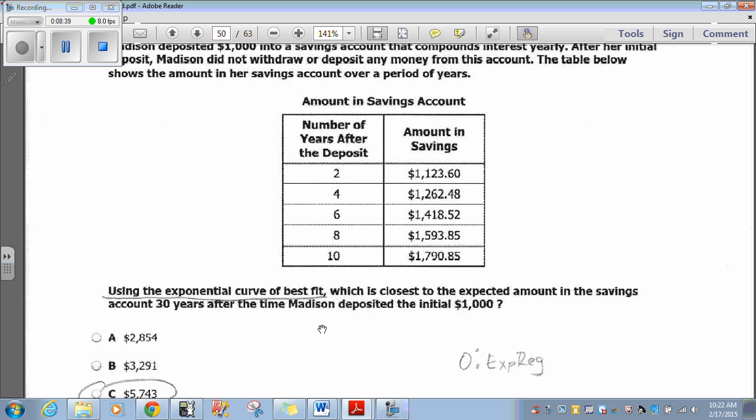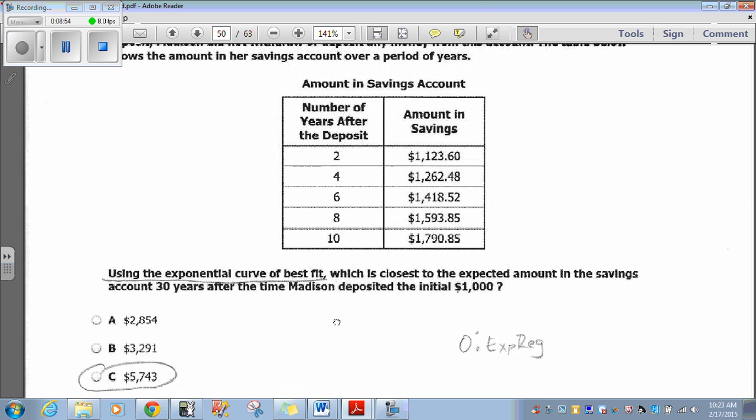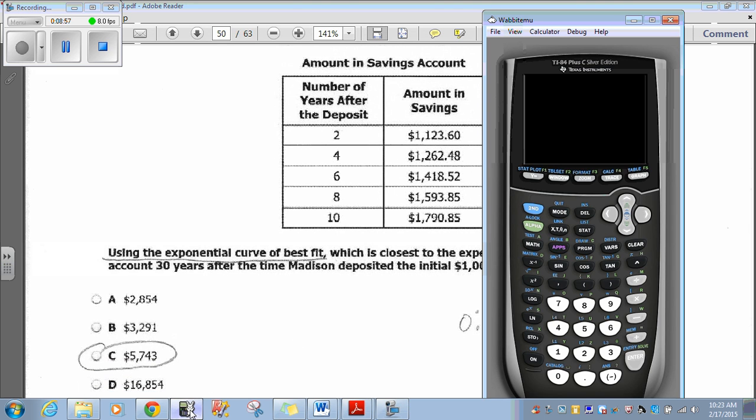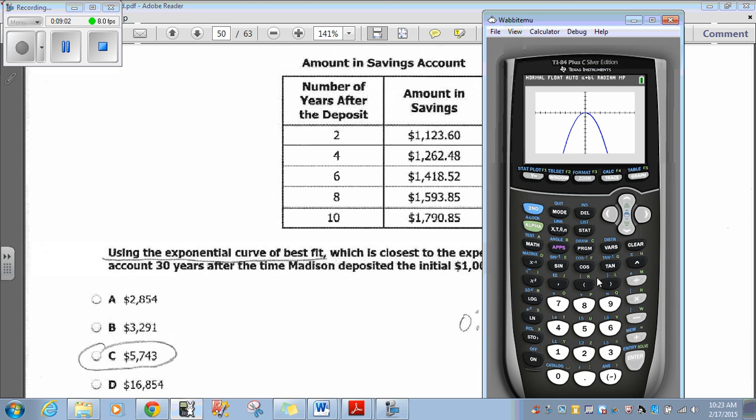In case your teacher hasn't shown you how to do this, this is how you would do it. The question is saying using the exponential curve of best fit. So we're going to use exponential regression. But first thing we need to plug in is our data. So we go to stat, edit. I want to clear out what I have in here previously.